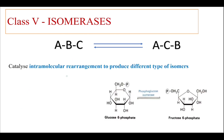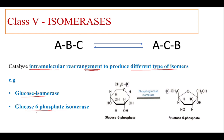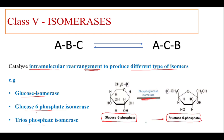Class 5: isomerases. Isomerases are the group of enzymes that catalyze intramolecular rearrangement to produce different types of isomers. Isomers are compounds with the same molecular formula but different structural arrangement. Examples: glucose isomerase, glucose-6-phosphate isomerase, triose-phosphate isomerase, and phosphoglucose isomerase. In this example, phosphoglucose isomerase catalyzes the intramolecular rearrangement of glucose-6-phosphate into fructose-6-phosphate — both of which are isomers with the same molecular formula but different structural arrangement.